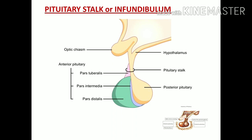What is the pituitary stalk? It is also called the infundibulum. The pituitary stalk is the connection of the pituitary gland to the hypothalamus — a stem-like structure connecting them. Within the pituitary stalk we have blood vessels and neurons which connect various parts of the pituitary gland to the hypothalamus, and we will explain those structures under the parts of the pituitary gland.